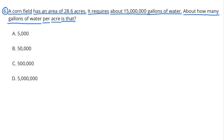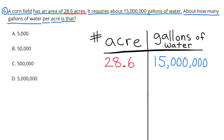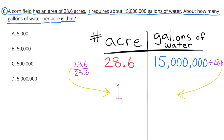Number six: a cornfield has an area of 28.6 acres and requires about 15 million gallons of water. About how many gallons of water per acre is that? To figure this out, I created a table with the left column having the number of acres and the right column having gallons of water: 28.6 acres for every 15 million gallons. Since I want gallons per acre, I need to divide down to one acre.